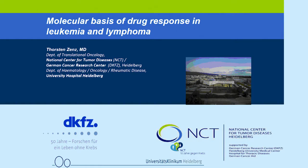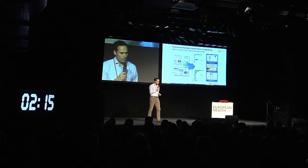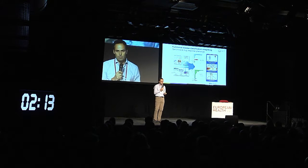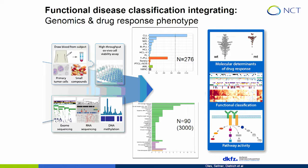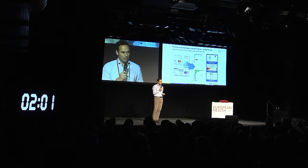We try to understand what governs drug response. To answer some of these open questions, we take primary cancer cells — this is not work on cell lines, but just taking the tumor as it is in the patient, from lymphoma and leukemia patients. We expose these primary cancer cells to a panel of drugs. This can be 60 drugs; this can go up to 3,000 drugs. And we read out the effect of these inhibitors on individual cancer patient cells.